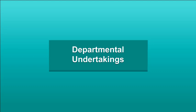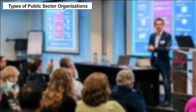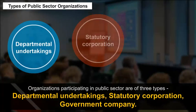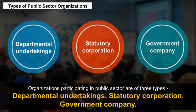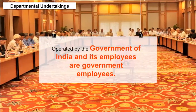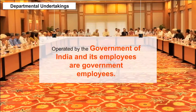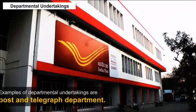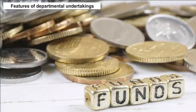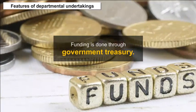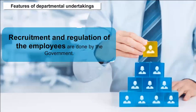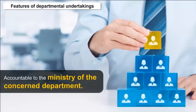Departmental undertakings. Organizations participating in the public sector are of three types: departmental undertakings, statutory corporation, and government company. Departmental undertakings are parts or extensions of the department of ministry, operated by the Government of India, with employees who are government employees. They work under the central or state government. An example is the post and telegraph department. Funding is done through the government treasury, and revenue earning and budget allocation also go to the government treasury. Recruitment and regulation of employees are done by the government, and they are accountable to the ministry of the concerned department.